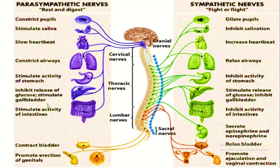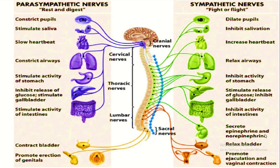Parasympathetic: inhibits the release of glucose, stimulates the gallbladder, stimulates the activity of the intestine, contracts the bladder, and promotes erection of genitals. Sympathetic: inhibits the stomach, stimulates the release of glucose, inhibits the gallbladder, inhibits the activity of the intestine, and secretes epinephrine or norepinephrine, which stimulates the heart rate.